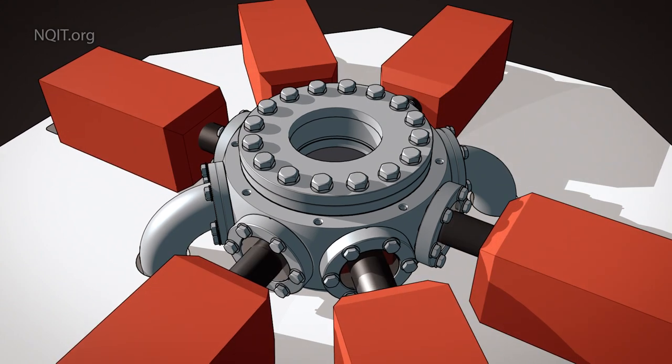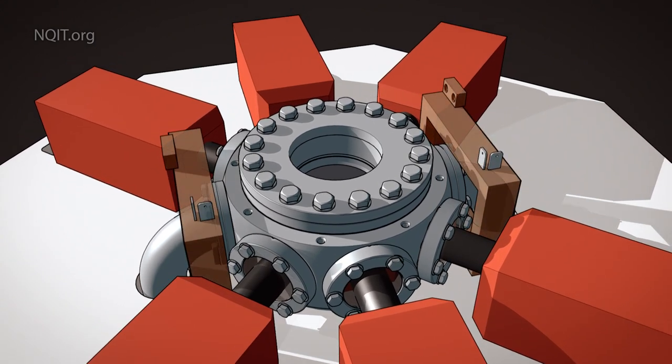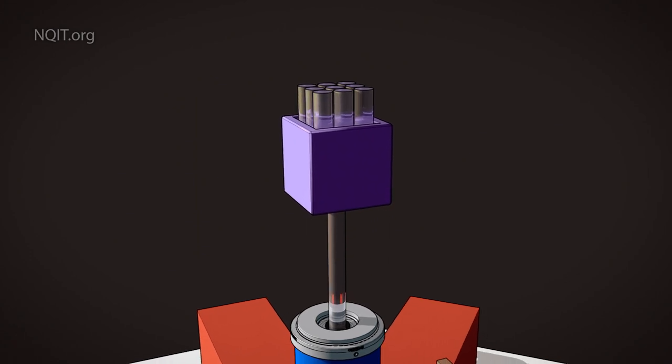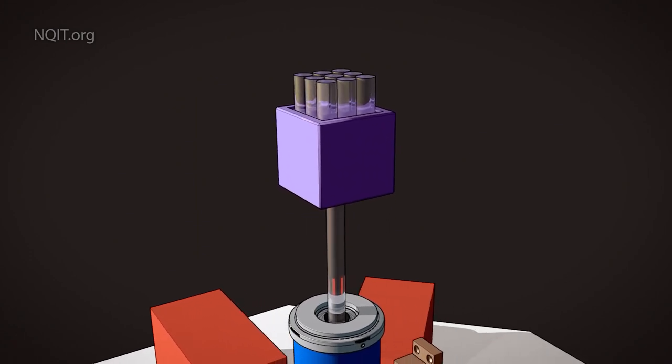Surrounding the vacuum chamber are laser systems, field coils, and crucially a photonic link system to capture the photons into an optical fiber.